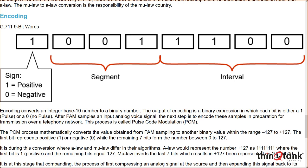After we take our PAM signal and generate the samples from our analog input waveform, where does this encoding happen in a Cisco voice world? At the phone. When you're talking into the handset, you're generating the pulse amplitude modulated signal. The output of the phone is digital — it's IP. The codecs are built into the phone, and they perform this transaction.